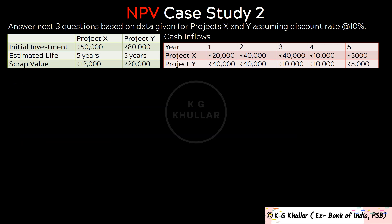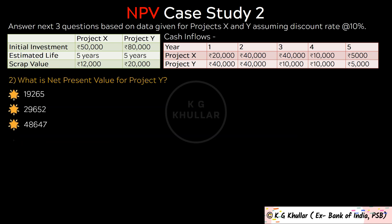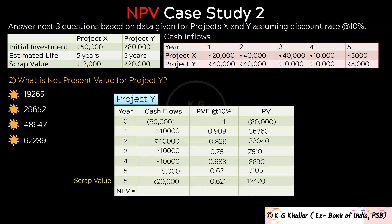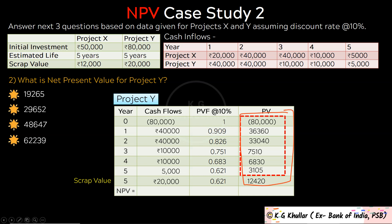The next question is: what is the net present value for project Y? Initial investment is Rs. 80,000, shown as negative at year 0, with present value of negative Rs. 80,000. At year 1, cash flow is Rs. 40,000 and present value factor is 0.909, so 40,000 multiplied by 0.909 equals Rs. 36,360. Similarly we find present values of all cash flows. Present value of scrap is 20,000 multiplied by 0.621 equals Rs. 12,420. Net present value comes out to Rs. 19,265. The correct option is A.